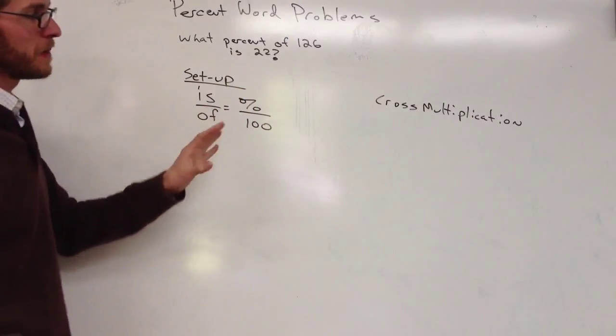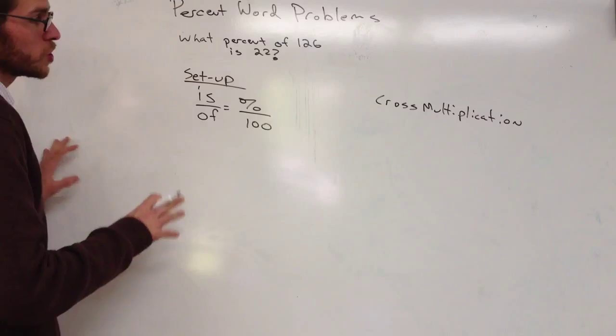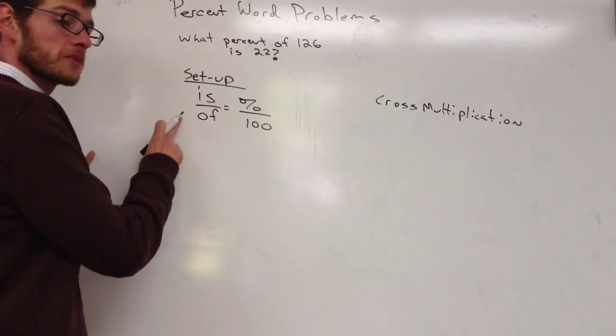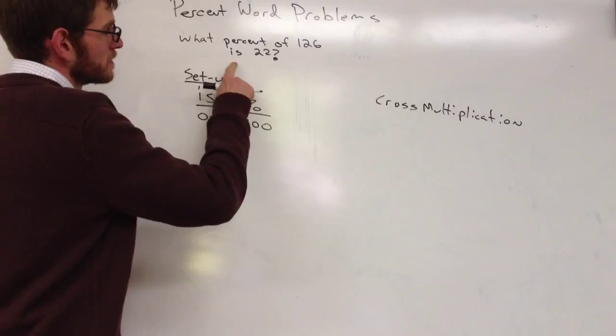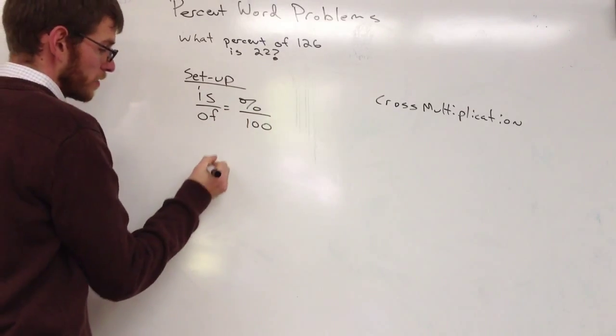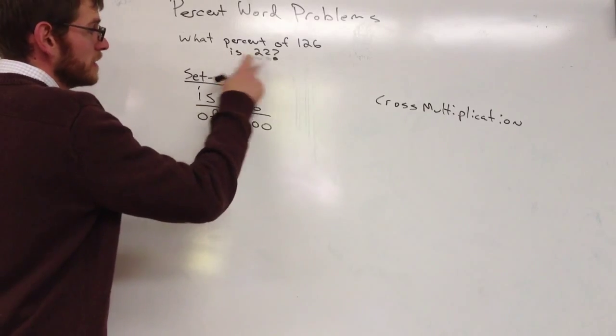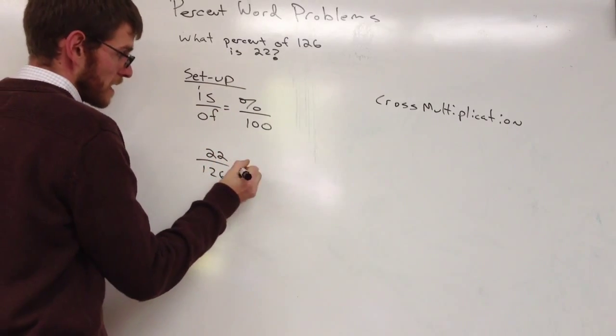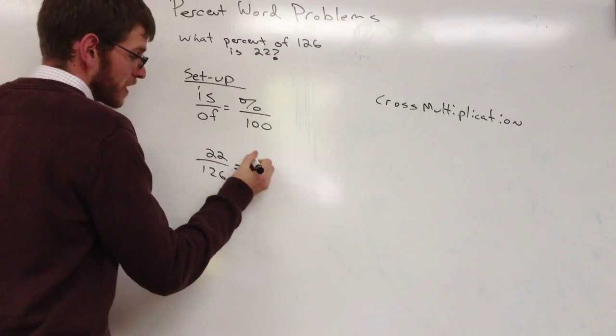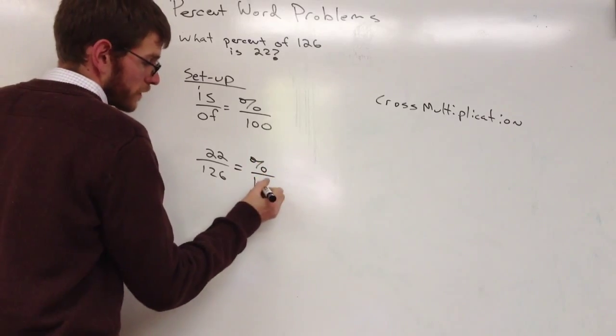If you had to pick, Kate, which number goes with is and which number goes with of? Of is 126 and is 22. I agree. So, 126 on the bottom, 22 on the top, and that equals some percentage over 100.